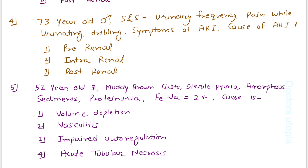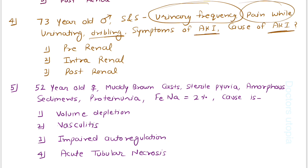Fourth question: a 73-year-old male presents with urinary frequency, pain while urinating, and dribbling — symptoms associated with the prostate. What is the cause of AKI? These symptoms suggest benign prostatic hyperplasia or prostate cancer; biopsy would be needed to confirm. BPH is the most common cause of post-renal AKI in men, so this is a post-renal cause.